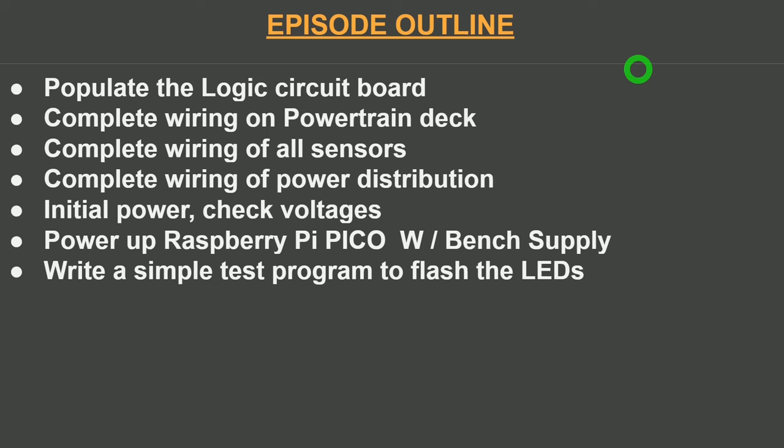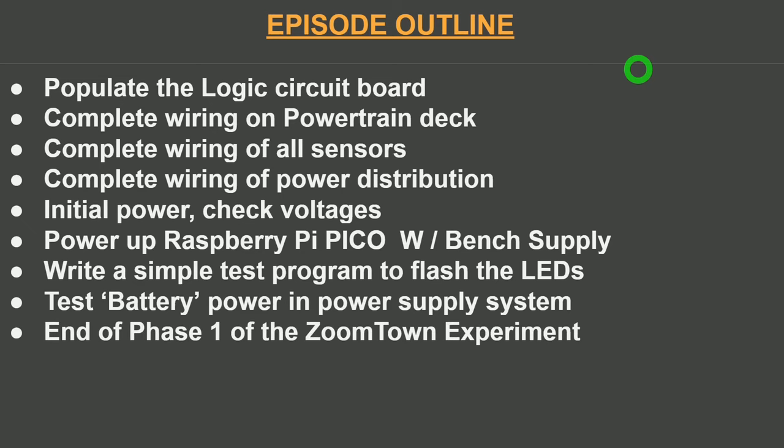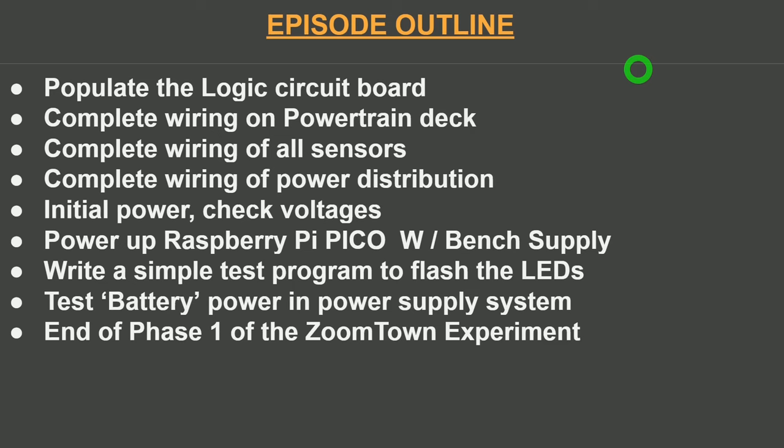Finally, we're going to write a simple test program to flash the bi-color LEDs that are on the logic control deck, just to make sure everything is functional in that regard. We'll then replace the bench power supply with a battery, the dual 18650 cells, and power up the system again, and double-check voltages, as well as make sure no magic smoke comes out of the system anywhere. And that'll end phase one of the ZoomTown experiment, which was selecting all the components and getting them electrically and mechanically assembled. Then we're going to cover what will be coming up in phase two.